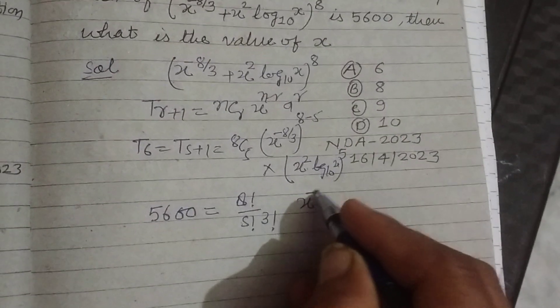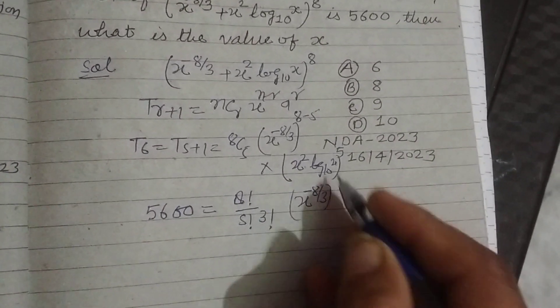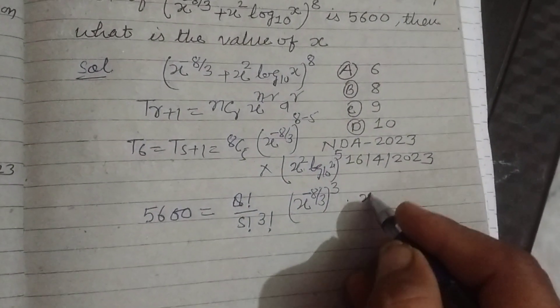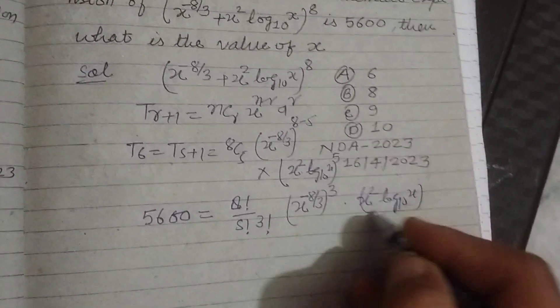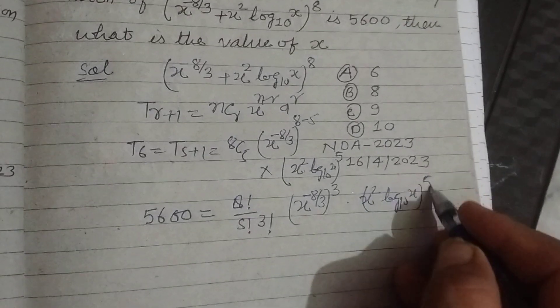And x to the power (-8/3) raised to 3 times x squared log base 10 of x raised to the power 5.